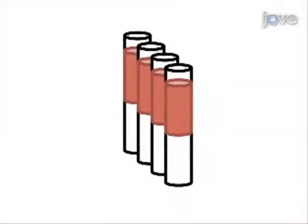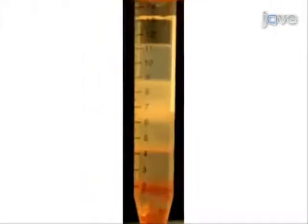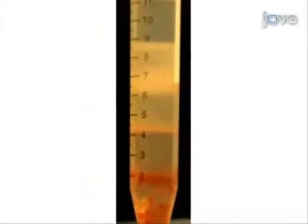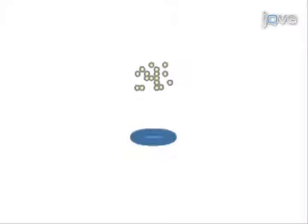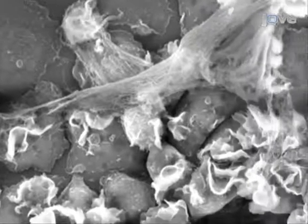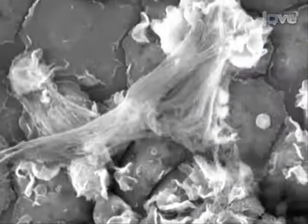In this video, granulocytes are isolated from human whole blood by histopaque density gradient centrifugation. Neutrophils are isolated from the granulocyte preparation by Percoll gradient centrifugation, seeded onto cover glass and stimulated to form NETs using chemical or biological stimuli. The cells are then processed for immunolabelling or EM for visualization of NETs.